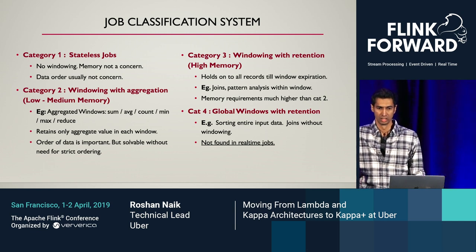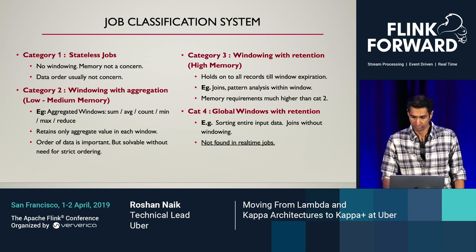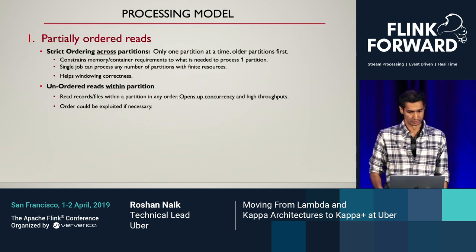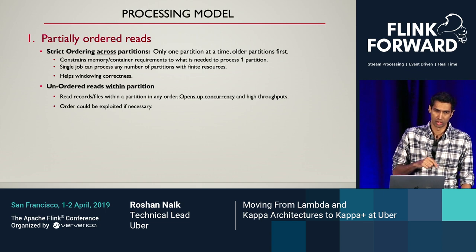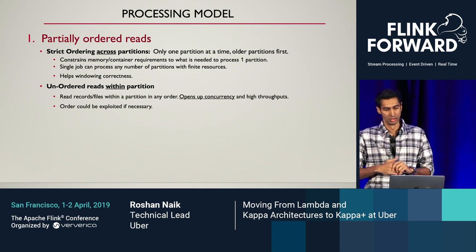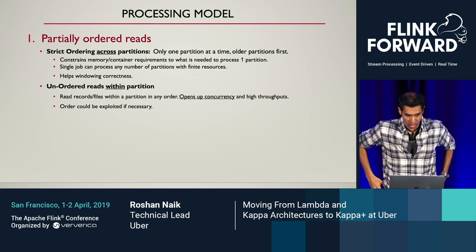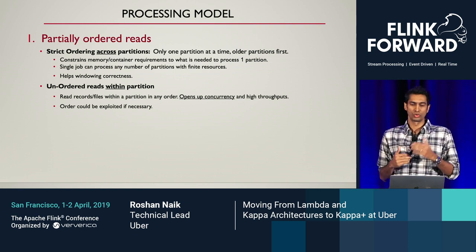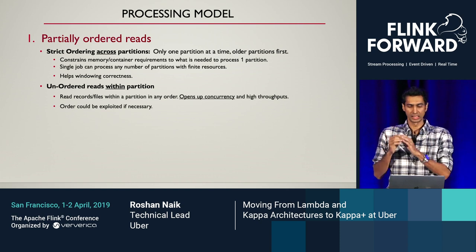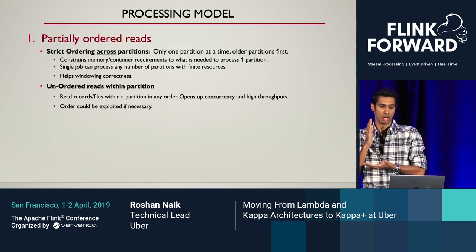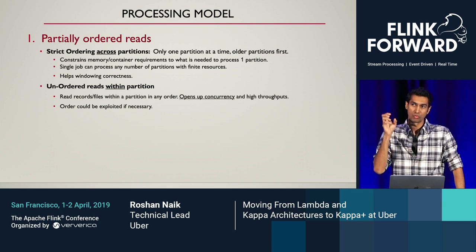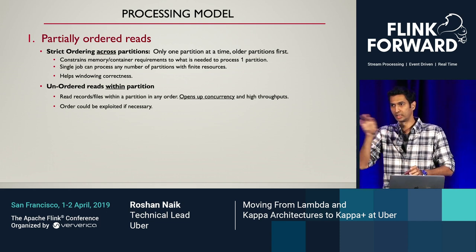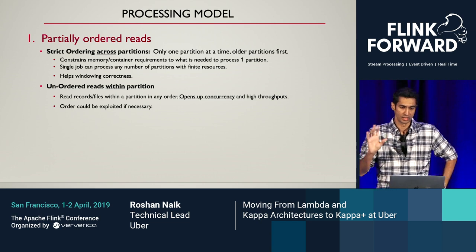So essentially the meat of the problem is categories two and three. The processing model specifies how to use streaming compute to address this. It first specifies a partially ordered read scheme. The base idea is strict ordering across partitions: you only process one partition at a time, oldest partition first. Within the partition, you're free to read the data in any order — so it's partially ordered.